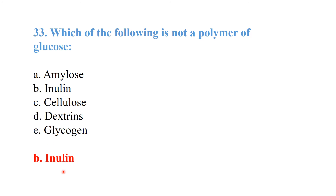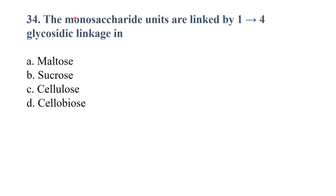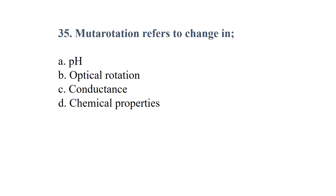Which of the following is not a polymer of glucose? Inulin is not a polymer of glucose. Monosaccharide units linked by 1-4 glycosidic linkage — that is maltose. Mutarotation refers to change in optical rotation.